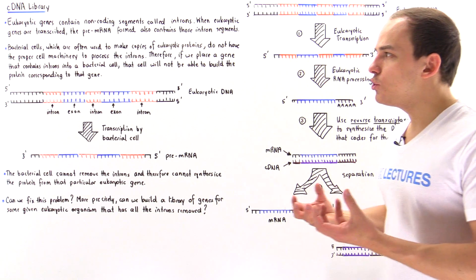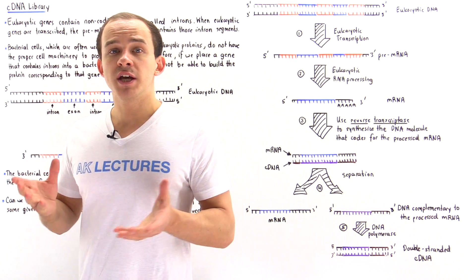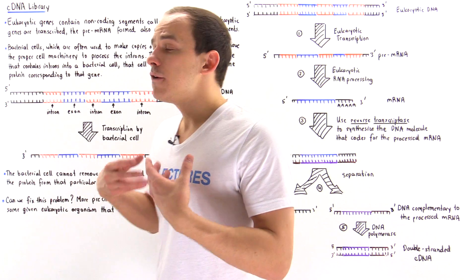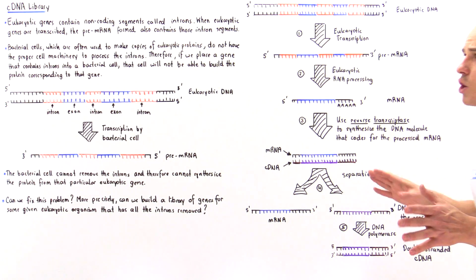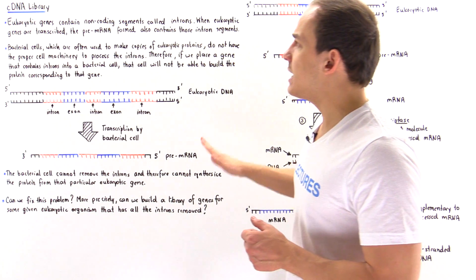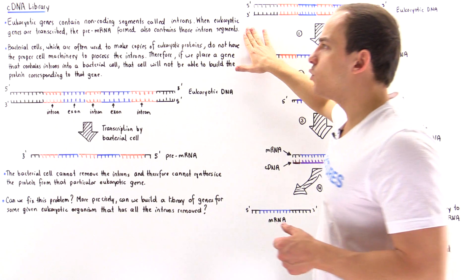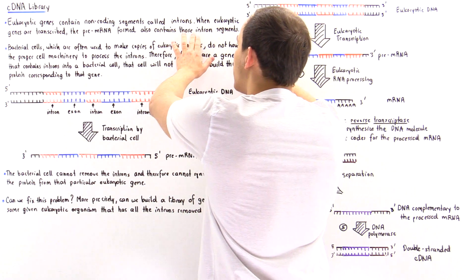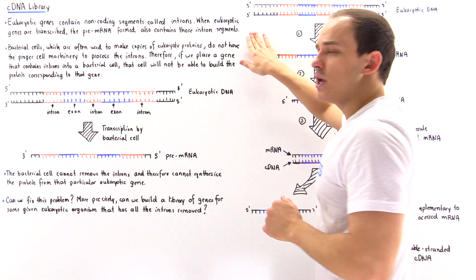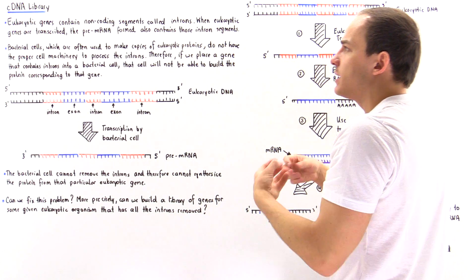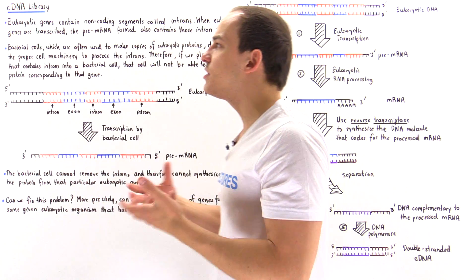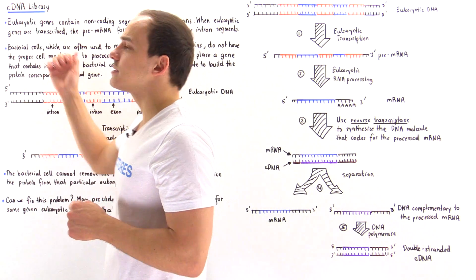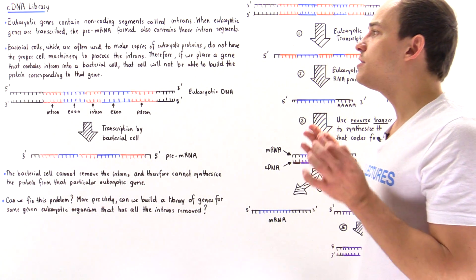If we are to use bacterial cells to form different types of eukaryotic proteins from eukaryotic genes, we have to first remove these introns from the eukaryotic DNA molecules. Eukaryotic genes contain non-coding segments called introns, and when eukaryotic genes are transcribed, the pre-mRNA that forms contains those intron segments. Eukaryotic cells have the proper machinery to remove them, but this does not exist inside prokaryotic cells such as bacterial cells — and this is a problem.